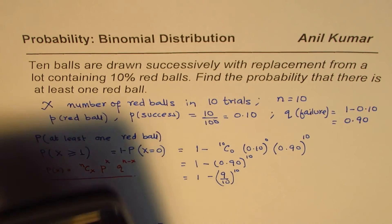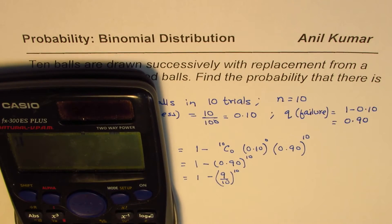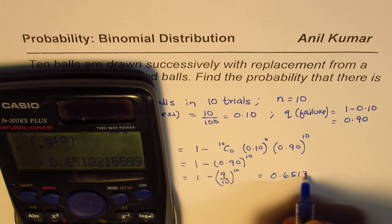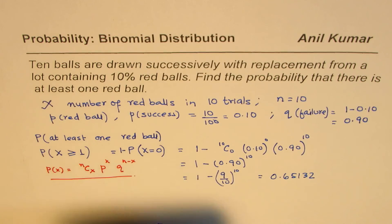Anyway, let's use the calculator and write: 1 minus, and we have within brackets, 0.9 to the power of 10, bracket close, equal to how much? So we have this number as 0.65132. So that is the probability.